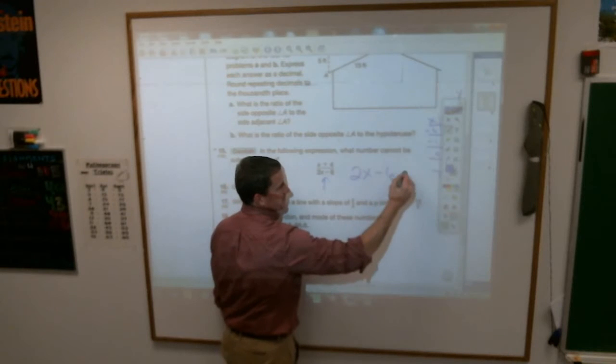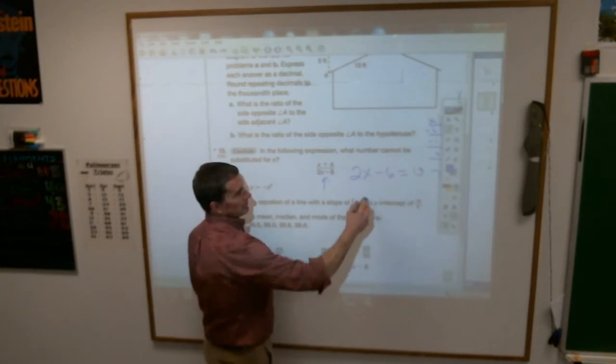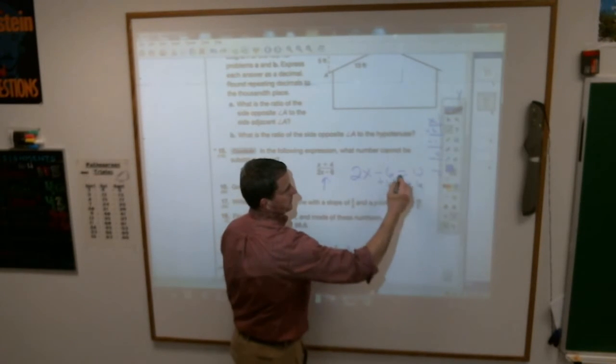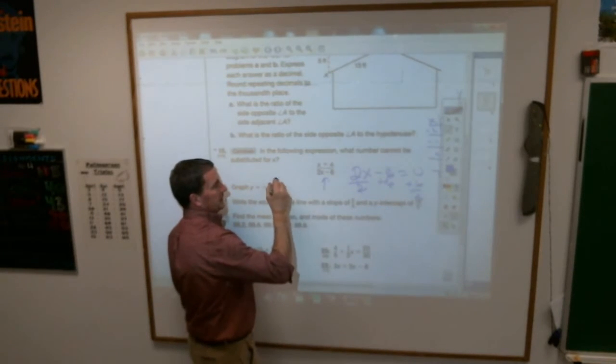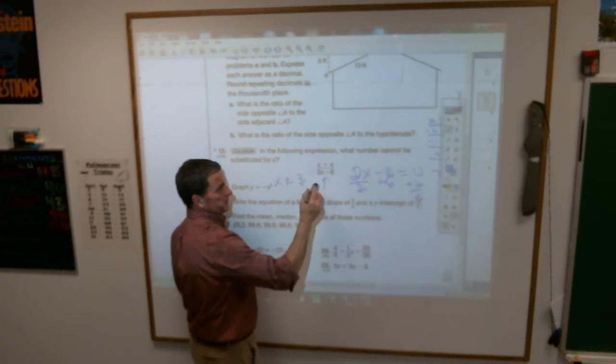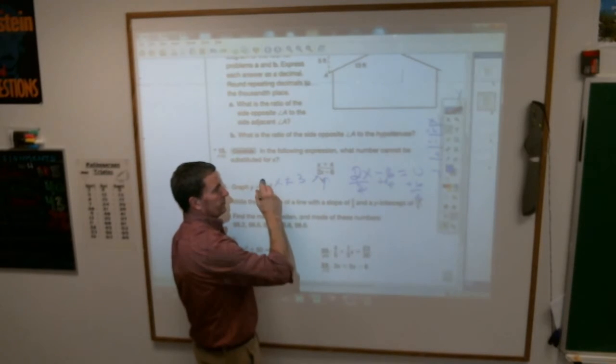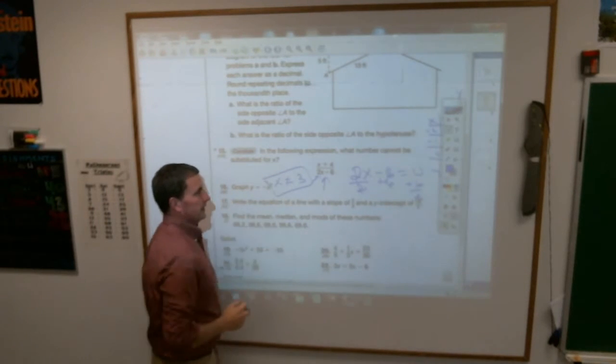But two x minus six, when will that be equal to zero? Now, add six, add six, divide by two, divide by two, x cannot equal three, because if you put a three in there, you get zero on the bottom, and it cannot happen.